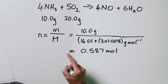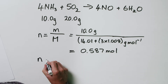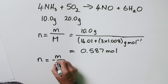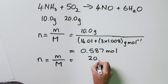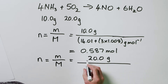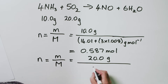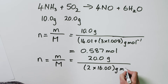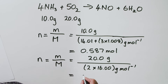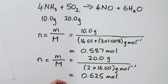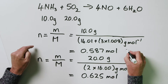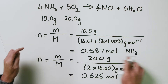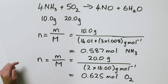We do exactly the same thing for oxygen: number of moles of O2 equals mass over molar mass, which is 20.0 grams divided by 2 times 16.00 grams per mole for the oxygen molecule. That gives us 0.625 moles of oxygen. So we've got 0.587 moles of ammonia and 0.625 moles of oxygen.